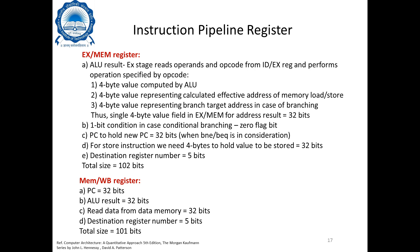For BEQ or BNE instructions, we need to store the value of the zero flag bit, which is either one or zero. The third field is a 32-bit PC to hold the new PC value in case BEQ or BNE is being considered. The fourth field is for store instructions — we need 4 bytes (32 bits) to hold the value to be stored.